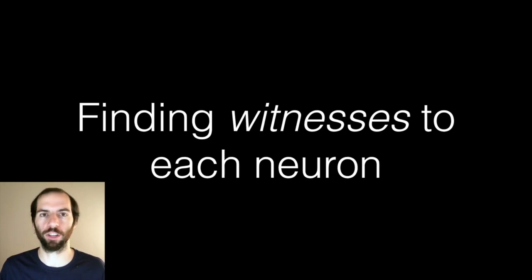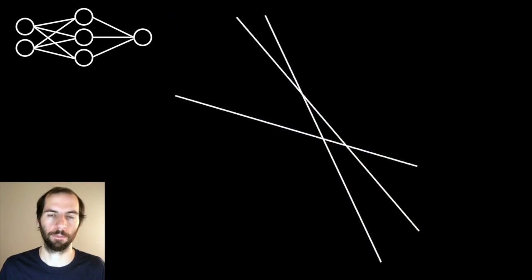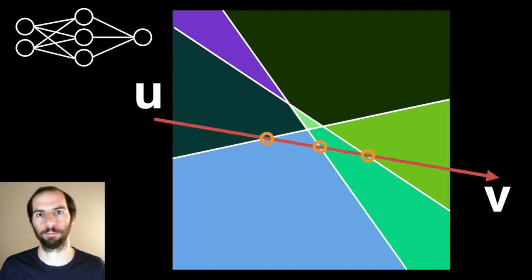Finding witnesses is a fairly simple procedure. We draw a random line through the input space from u to v, and we sweep across this line looking for discontinuities in the gradient. If we plot the output of the function as we travel from u to v, we get a plot with really three different lines at which the gradient is discontinuous, corresponding to four linear regions. The points at which the gradient is discontinuous directly correspond to these critical hyperplanes, letting us very efficiently recover these points.